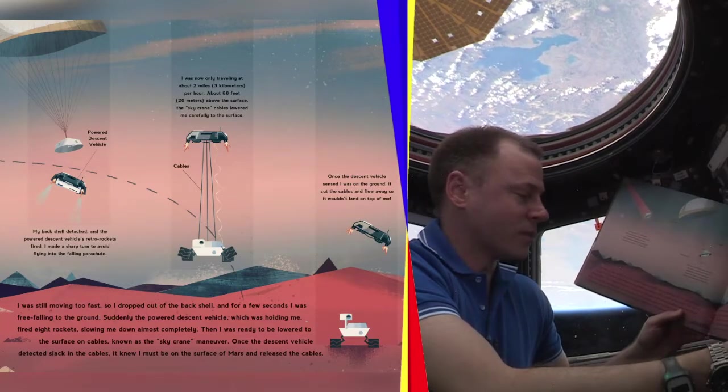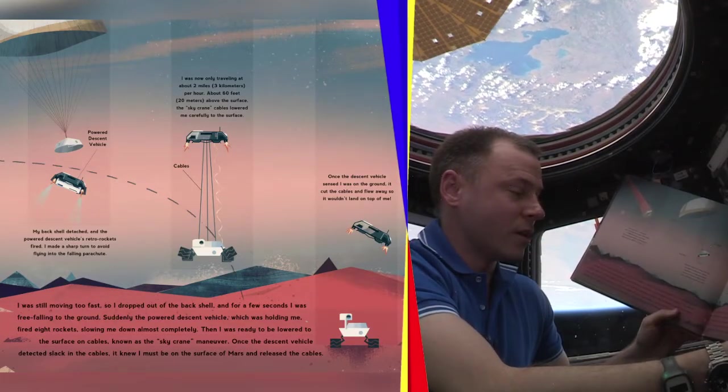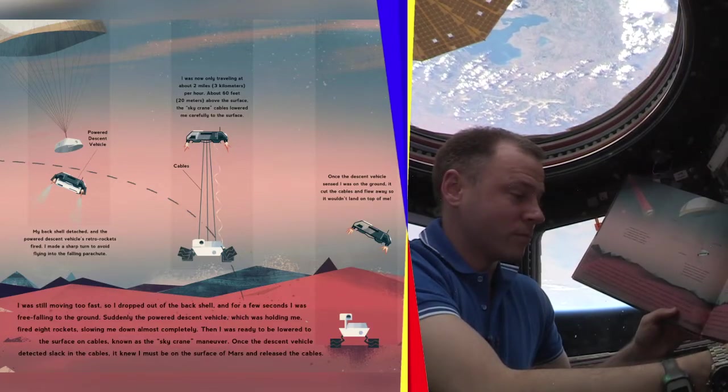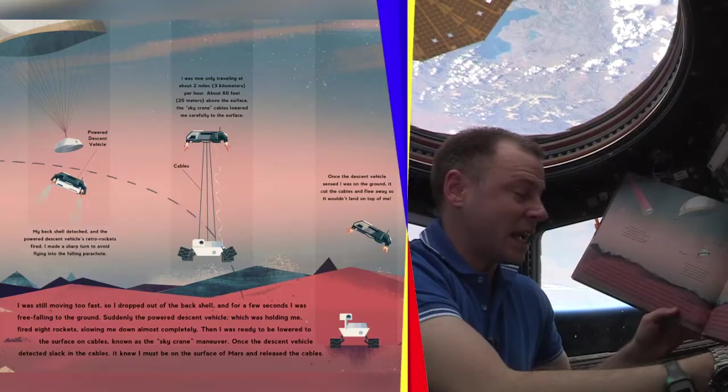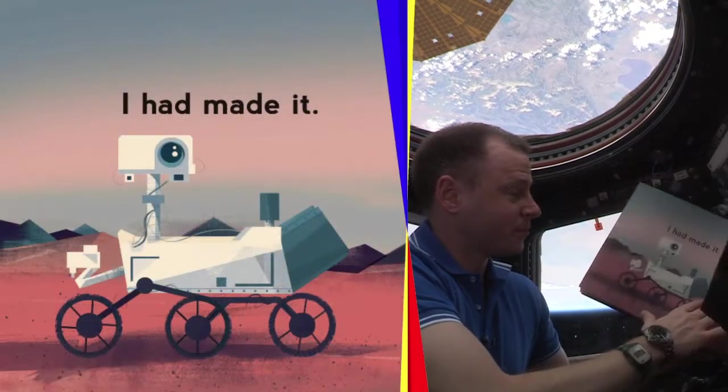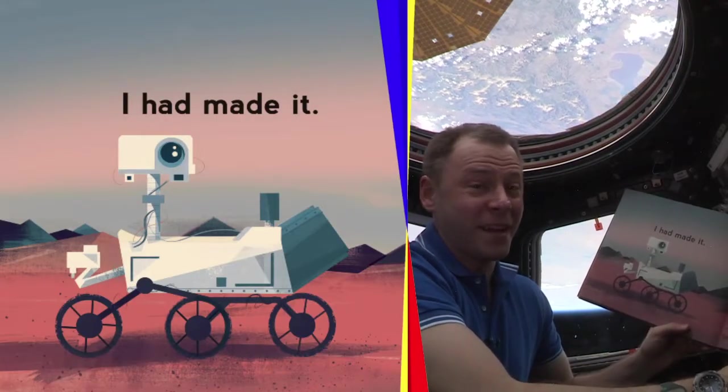Then, I was ready to be lowered to the surface on cables, also known as the sky crane maneuver. Once the descent vehicle detected slack in the cables, it knew I must be on the surface of Mars and released the cables. I had made it.